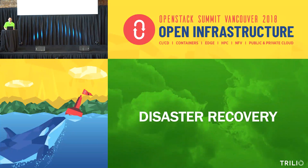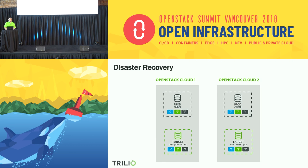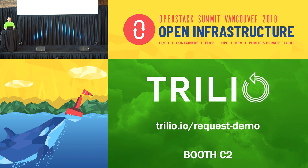One last thing is disaster recovery. Let's say you have OpenStack Cloud 1 and Cloud 2, where Cloud 2 is set up and ready to go. On OpenStack Cloud 1, you've got TrilioVault as the backup solution. You do your local backups, replicate the target, and then recover into Cloud 2 from there.